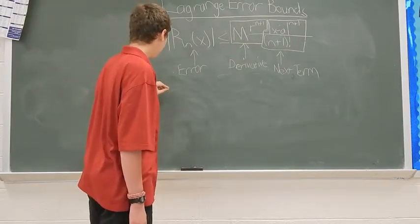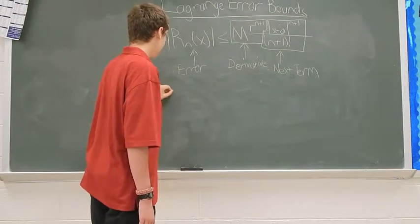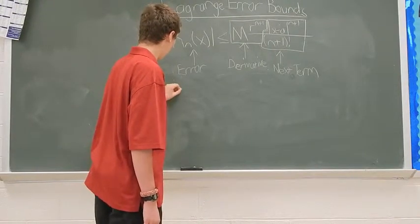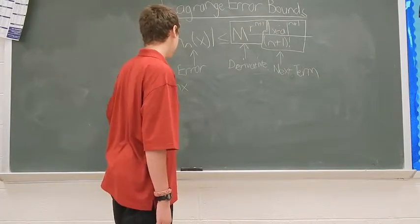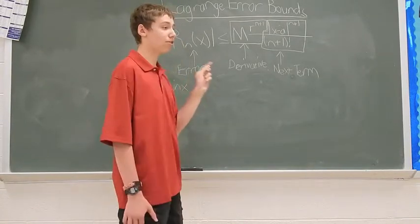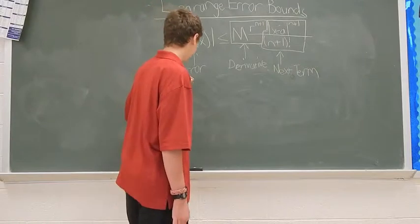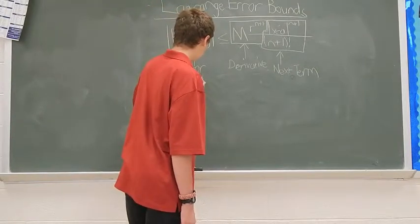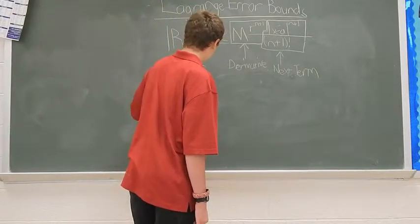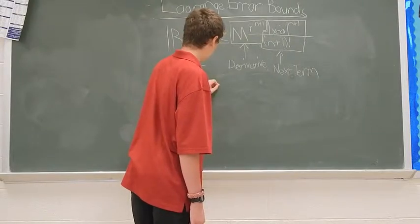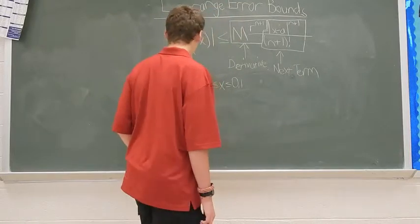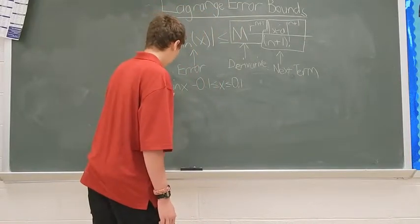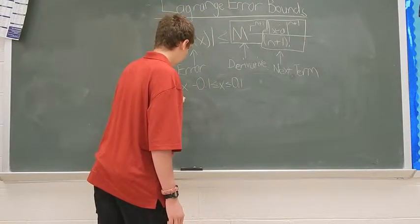Let's say that you have sine of x, and that sine of x is going to be centered at 0, but you're looking for the error between negative point 1 and point 1. And that is going to be the second term that you're looking to maximize.